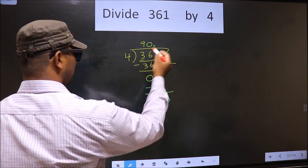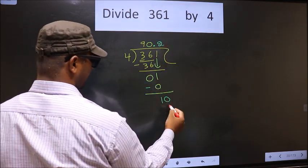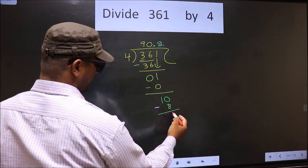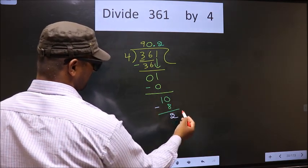A number close to 10 in 4 table is 4, 2 is 8. Now, you subtract 10 minus 8, 2.